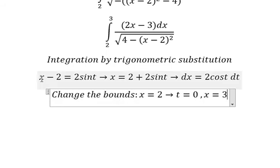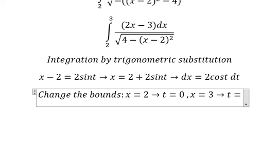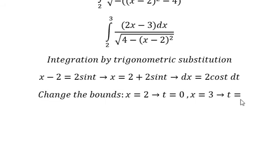When x equals to number 3, we put number 3 in here: 3 minus 2, we have 1. Later we divide by 2, so sine t equals 1/2, so t in here should be pi over 6.